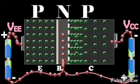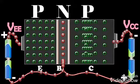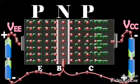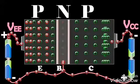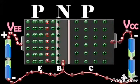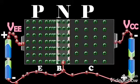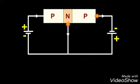In the external circuit, the collector current IC is due to the flow of electrons from the negative terminal of the battery VCC into the collector. Applying Kirchhoff's current law to the circuit,